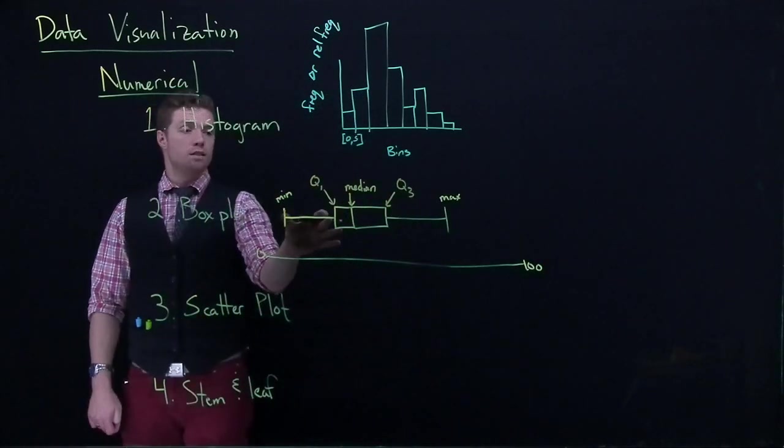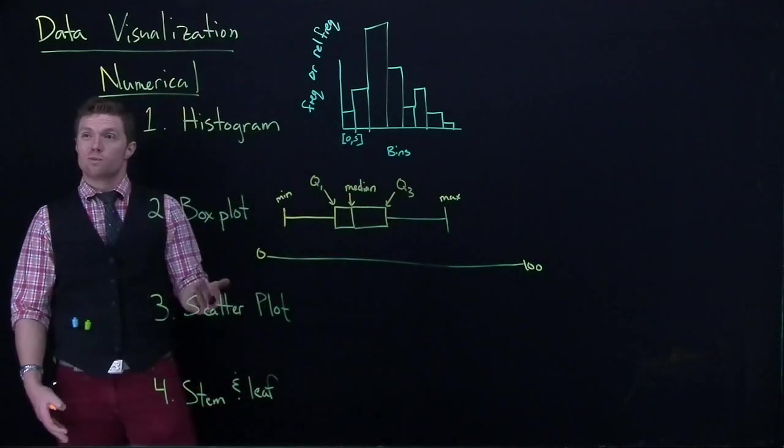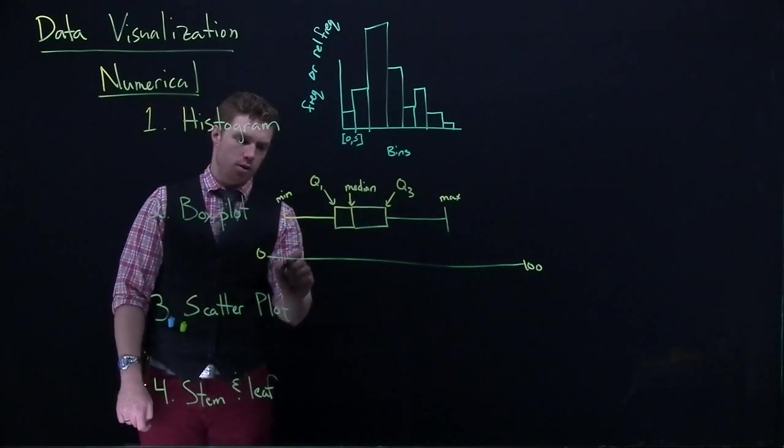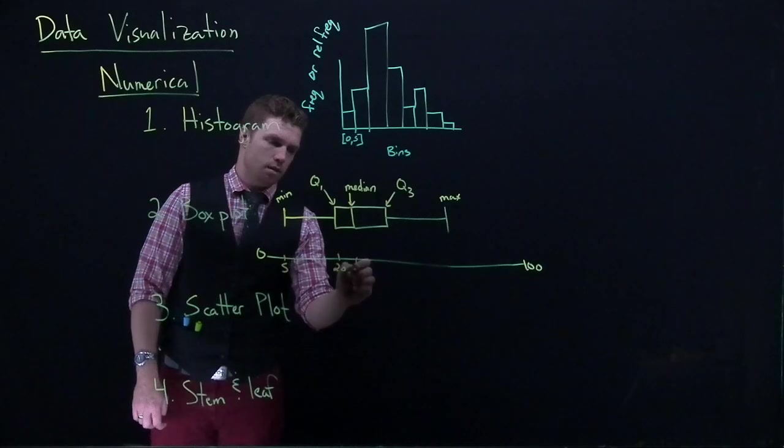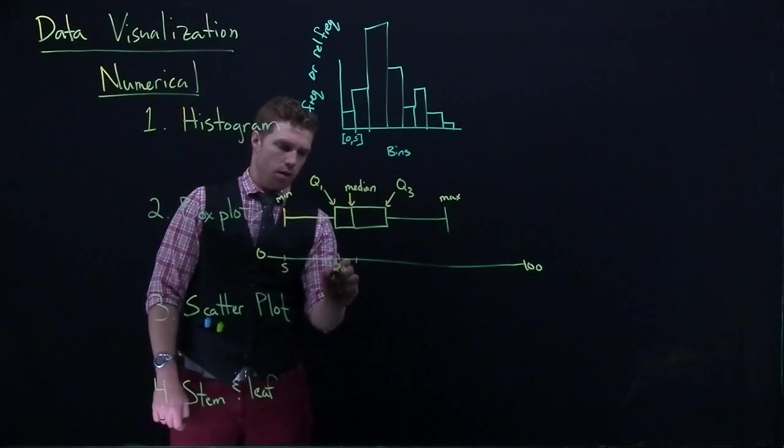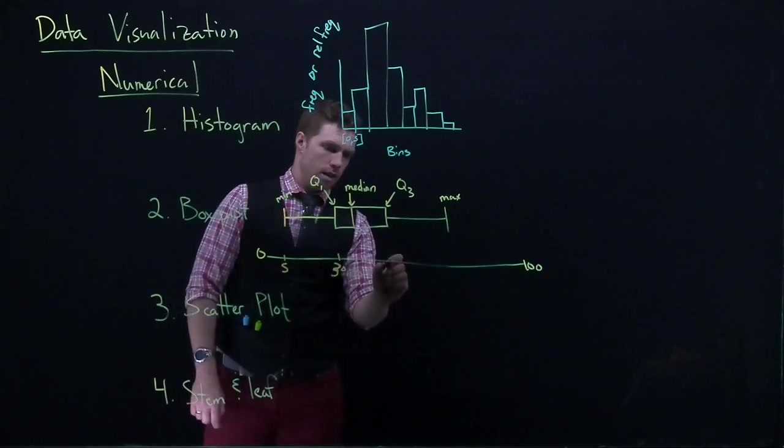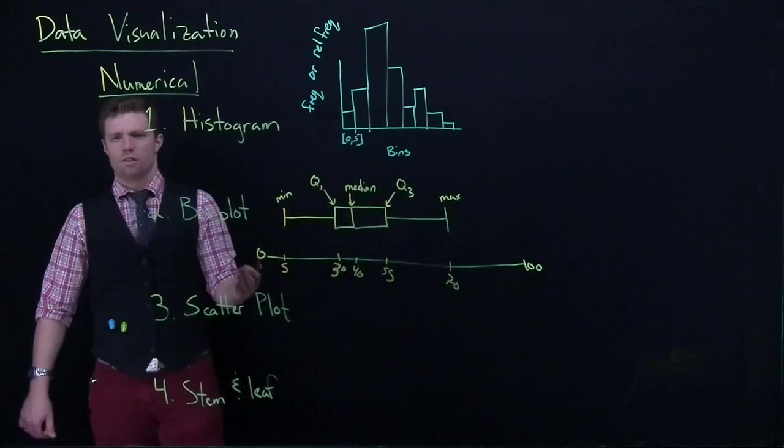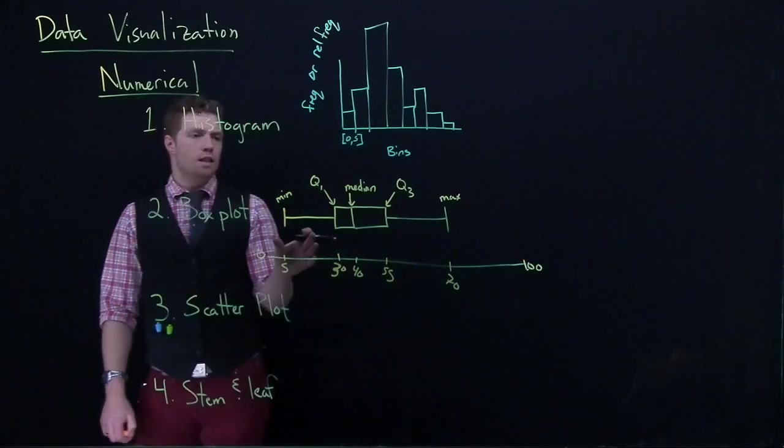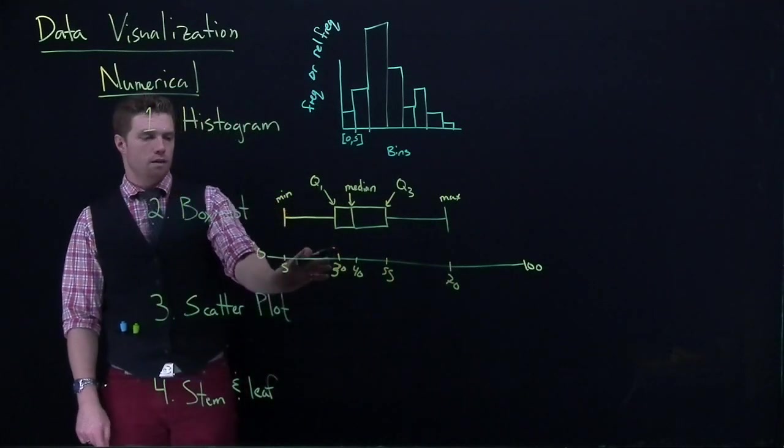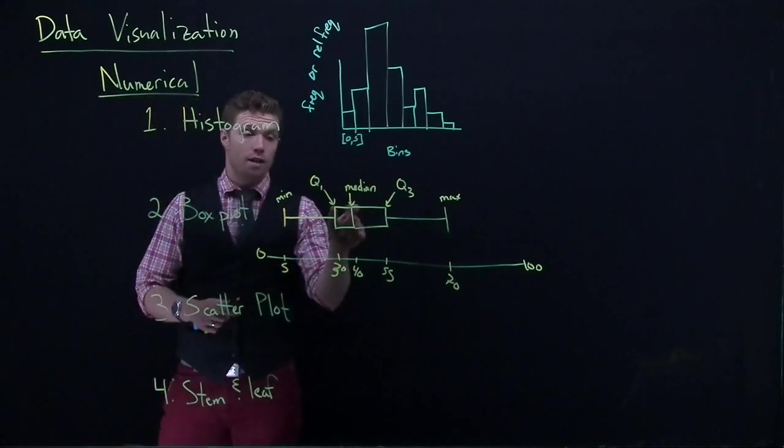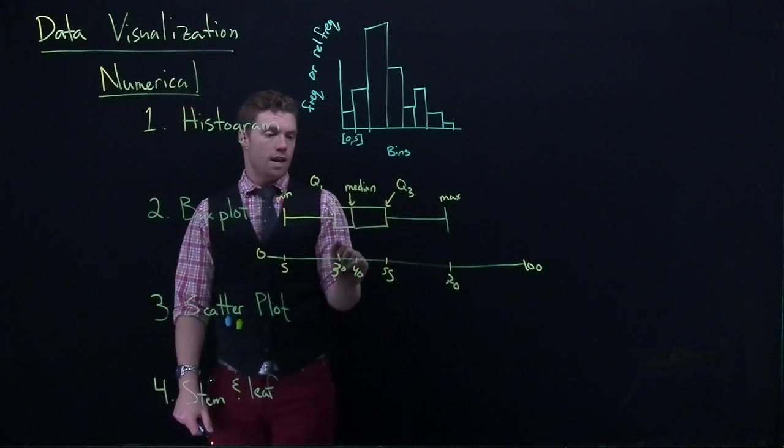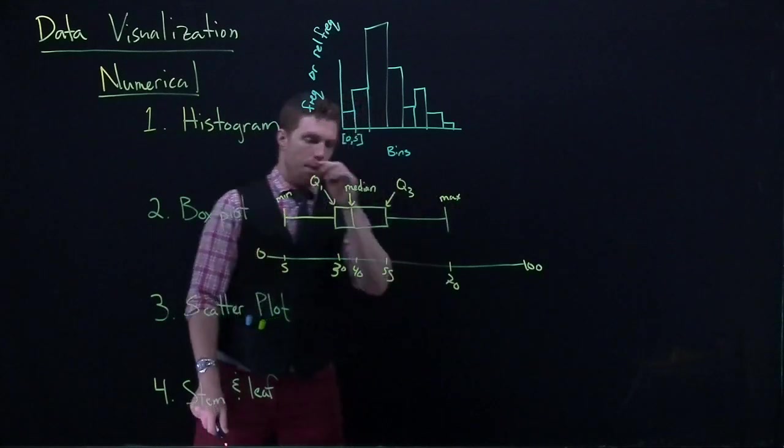Now we call them quartiles because it breaks the data up into 25% chunks. So we can say that 25% of the data lands between 5 and 30. We could say the next 25% of the data lands between 30 and 40. The next 25 lands between 40 and 55. And the next 25 lands between 55 and 70.